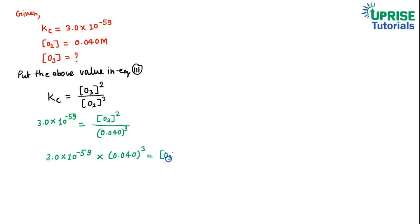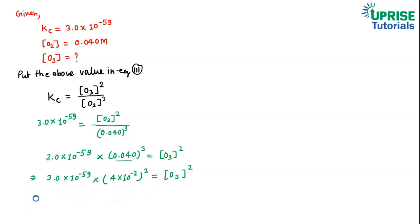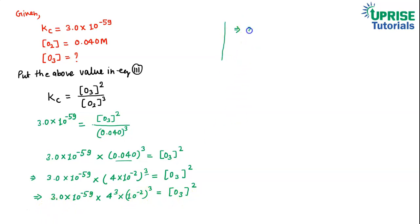We can write 0.040 as 4 × 10⁻², so (0.040)³ = (4 × 10⁻²)³. Expanding: [O₃]² = 3.0 × 10⁻⁵⁹ × 4³ × (10⁻²)³. Now 4³ = 4 × 4 × 4 = 64, and (10⁻²)³ = 10⁻⁶. So: [O₃]² = 3.0 × 10⁻⁵⁹ × 64 × 10⁻⁶.